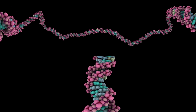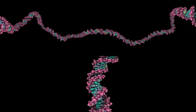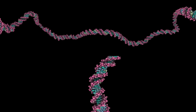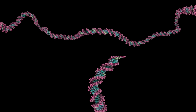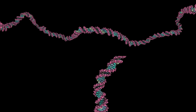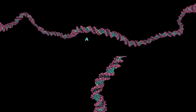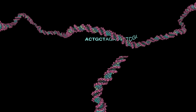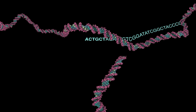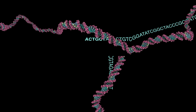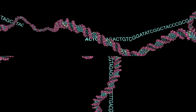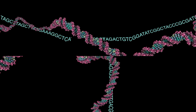The DNA code is made up of just four different bases, represented by the letters A, C, T and G. The unique order of these letters gives our cells the genetic instructions to function.